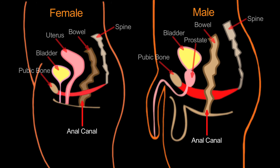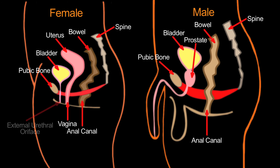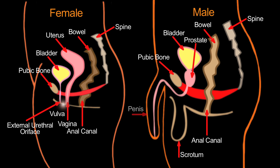In front of the anal canal in the female perineum are the vagina, the external urethral orifice, and the female external genitalia, the collective name for which is vulva. In the male perineum, in front of the anal canal, are the scrotum, penis, and the external urethral orifice.